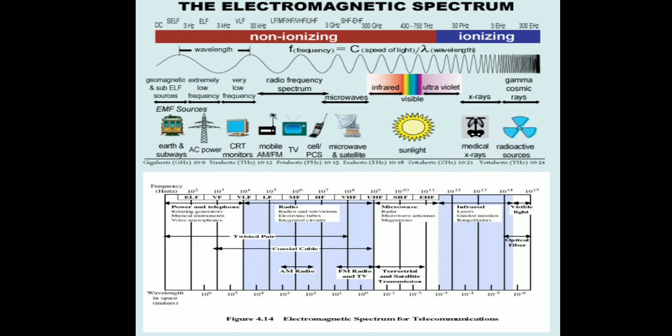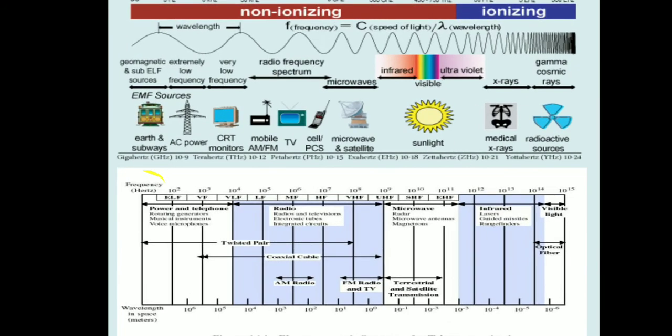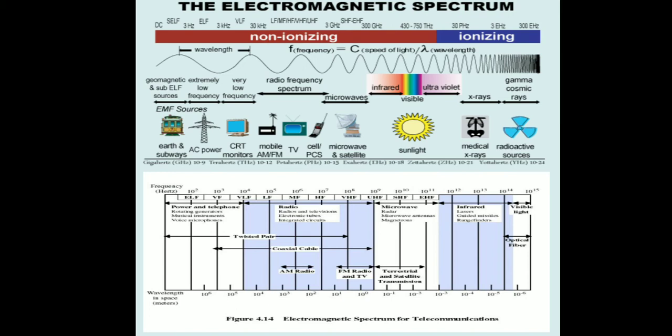Wireless Communication Systems use the Electromagnetic Spectrum. The Electromagnetic Spectrum consists of different frequency ranges, from DC to Ultra High Frequency ranges. These different electromagnetic spectrums are used in different applications. For example, for power supply or telephone communication we use a low frequency band. For twisted pair communication we use very high frequency bands. For coaxial cable communication we use ultra high frequency bands.